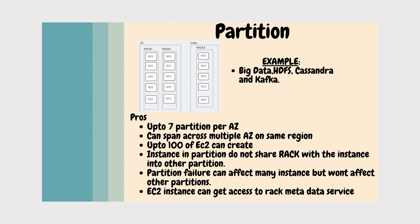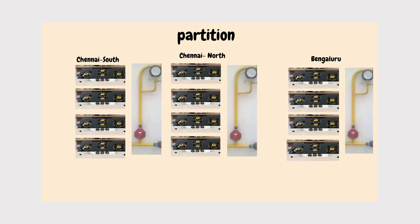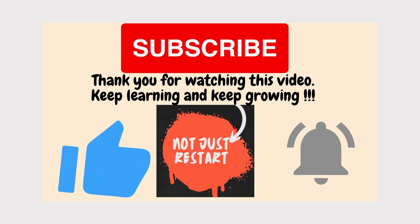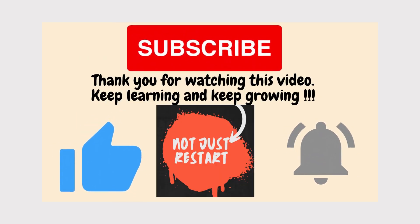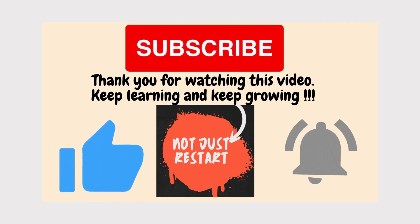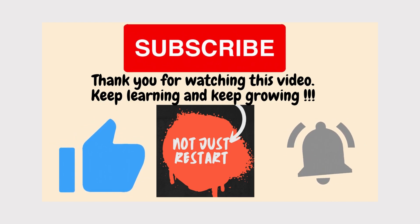Big data applications such as HDFS, Cassandra, and Kafka should consider using the Partition strategy. The real-time example: imagine apartments in Chennai South, Chennai North, and Bangalore. Chennai South apartment has a gas pipeline supporting all the gas stoves in each flat. If this gas pipeline has an issue, only Chennai South is affected — not Chennai North or Bangalore. I hope you've got some insight about placement strategy. If you like this video, please like and subscribe to my channel. Thank you for watching!